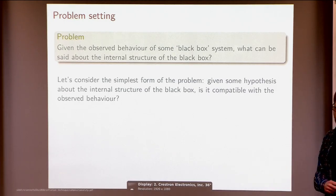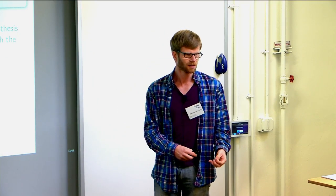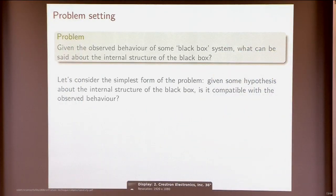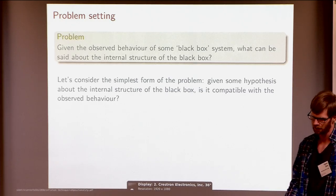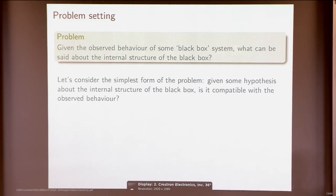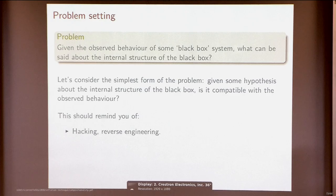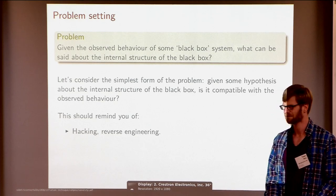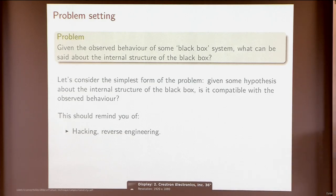To make this more precise in the simplest manner, I'd like to address the question of: given some particular hypothesis about the structure of the network inside the box, is this hypothesis feasible? Is it possible to explain the observed behavior with this particular network topology? This is the kind of problem that comes up when you do hacking or reverse engineering — you can only probe the system from outside, and you want to reproduce or rebuild it, so it's helpful to have some idea about what could be inside.